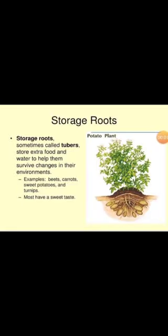Now, modified roots. In some plants, roots perform special tasks. They go through changes in structure to perform more functions. These changes are called modification, and these roots are called modified roots. The first type is storage roots. In some plants, extra food is stored in the tap root for the future — like carrot, beetroot, radish, turnip, etc. The food is stored in the form of carbohydrates, that is sugar, starch, etc. We also eat these roots as vegetables because they are a good source of carbohydrates.